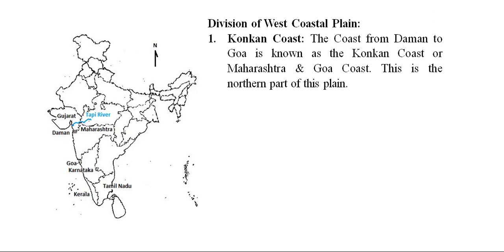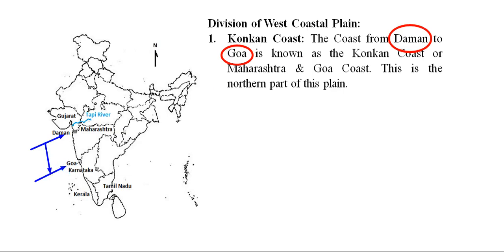Now we will discuss the divisions of the Western Coastal Plain. The first subdivision is the Konkan Coast — the coast from Daman to Goa is simply known as the Konkan Coast or Maharashtra and Goa Coast; this is the northern part of the plain. On the map, you can see the location of Daman here and the Goa region here; the entire region from Daman to Goa is the Konkan Coast.